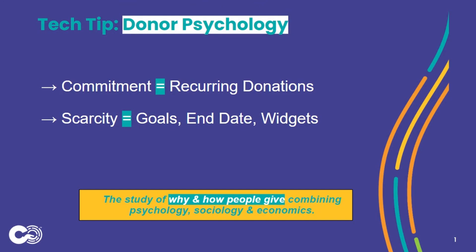The first is commitment — the idea that a donor will uphold their commitment in order to preserve their own self-image. Leverage this by asking folks to commit. Of course, we think about the idea of recurring donations, and folks can set up monthly recurring donations with ease on Colorado Gives.